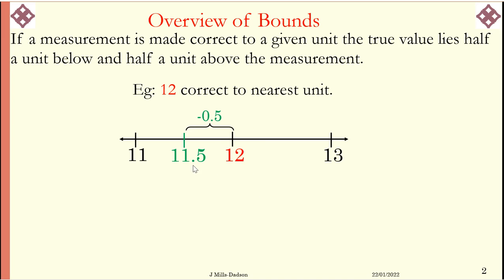we take 0.5 from 12, and 11.5 becomes the least number, which we call the lower bound, or the smallest possible value.